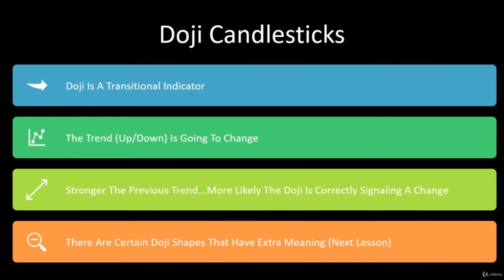The stronger the previous trend, the more likely the doji is actually going to correctly signal a change. If it's not a very strong trend — kind of in and out — the doji might not be as impactful. But if you've had a long, really strong bullish upward trend and you see a doji, there's a much higher chance the doji will correctly signal that change and transition. Nothing's perfect, but it's something you definitely want to be aware of and adjust your trading based on.